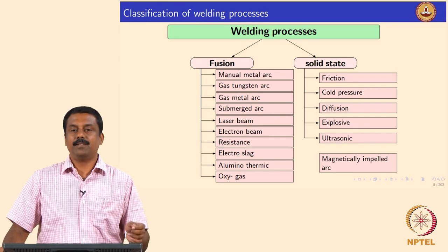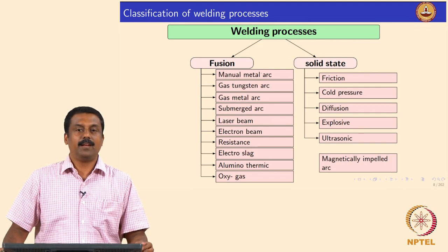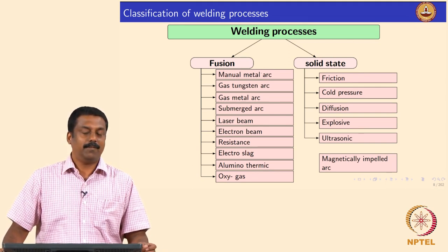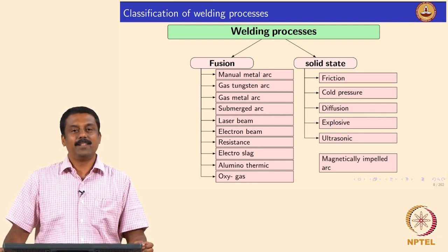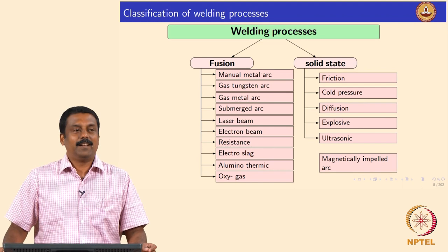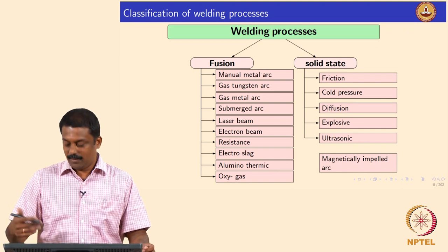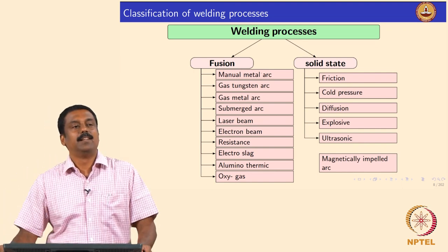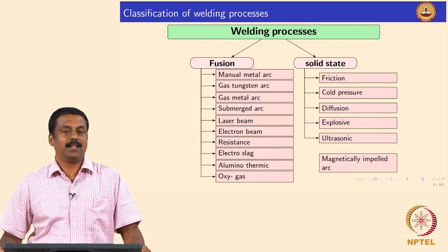A new process being installed in our lab is magnetically impelled arc butt welding, which uses both arc and pressure. It is difficult to define which is rate-controlling - whether the arc or the pressure - so it is left hanging between the two classifications in the diagram, since it uses both arc and pressure to make the interface coalesce.